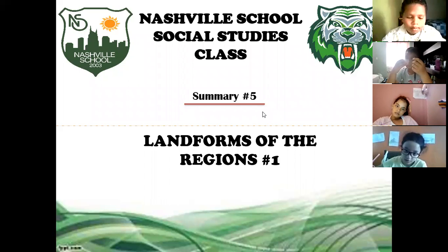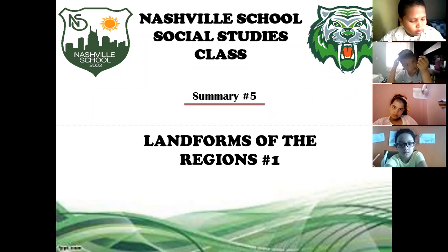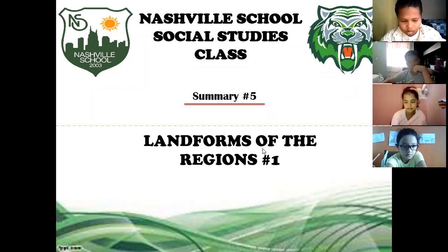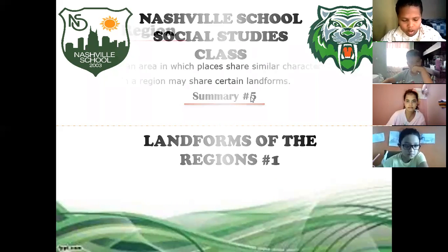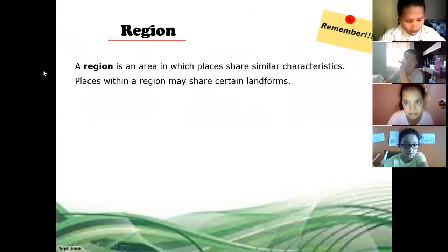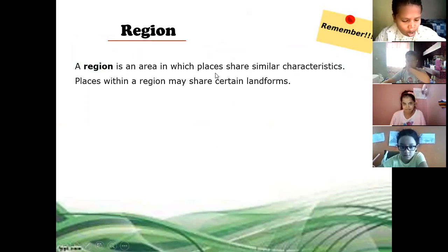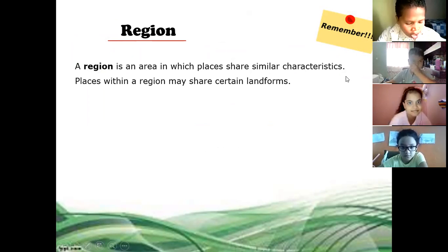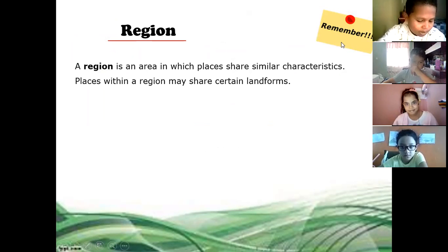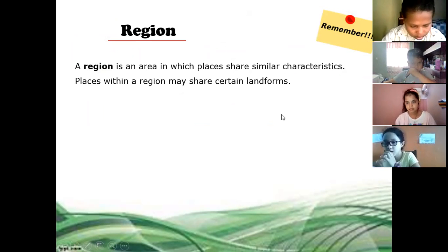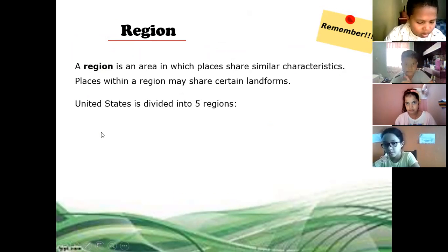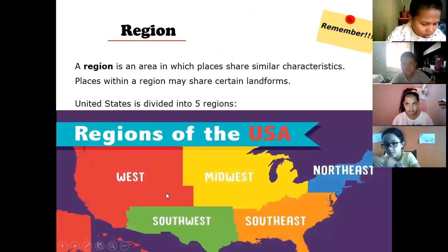Good morning, guys. Welcome to social studies class. Our topic for today is landforms of the regions. Remember, the regions of the United States are five. A region is an area in which places share similar characteristics. Remember, you already copied this information. Places within a region may share certain landforms. These are the five regions: West,